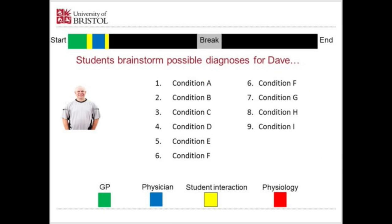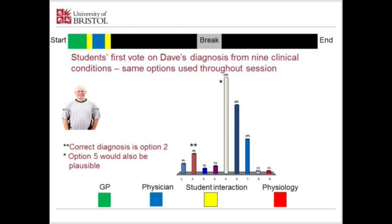The students then brainstorm possible diagnoses for Dave, calling out what the GP might be thinking given the urinalysis. They come up with a range of options, usually including acute kidney injury, chronic renal disease, urinary tract infection, and possibly cancer. We write those up on the board and produce a prepared e-voting slide listing those conditions, and the students vote on Dave's most likely diagnosis from nine potential clinical conditions.